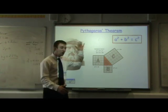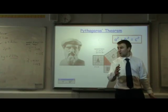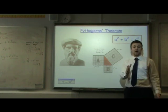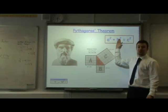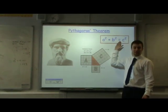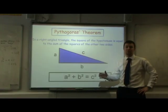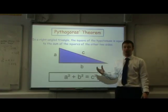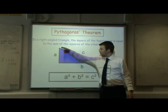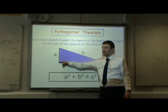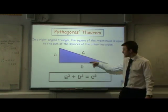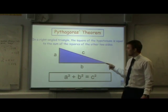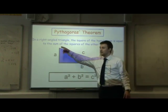Pythagoras found out a lot of useful maths, the most famous of which is called Pythagoras' theorem. You might know that as a squared plus b squared equals c squared. Pythagoras' theorem is all about right angle triangles. What Pythagoras found is that the area of the square with side length a and the area of the square with side length b is equal to the area of the square with side length c.